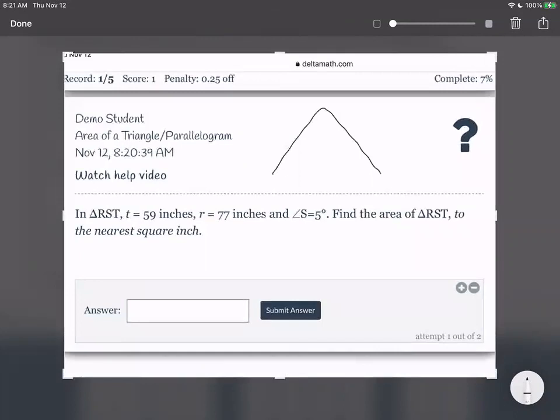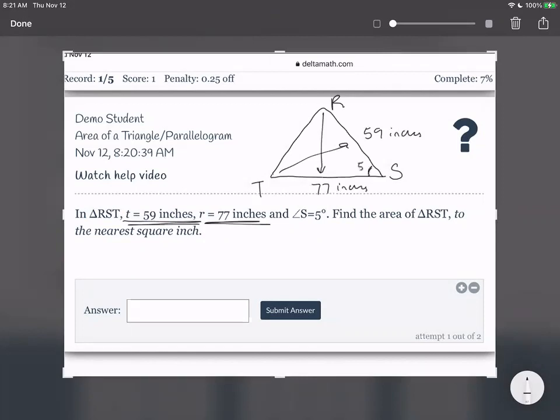Here is a triangle RST. So T is 59 inches. That means that side is 59. And R is 77, which means that side is 77. And angle S is 5 degrees. So this angle that's in between it is 5 degrees.